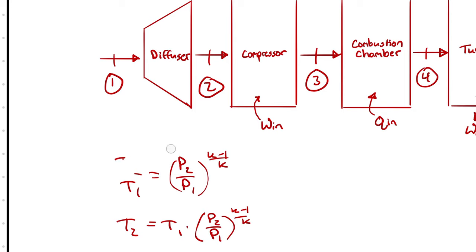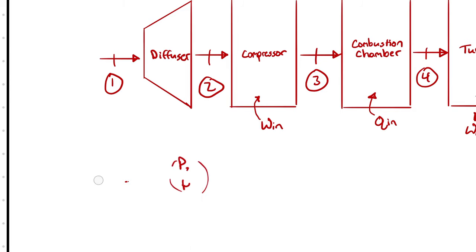We know how much the kinetic energy of the air decreases across the diffuser. Since the diffuser operates ideally, all that kinetic energy decrease goes into the fluid's enthalpy. For an ideal gas, that enthalpy change directly corresponds to a temperature change, and because we assume constant specific heat capacity, we substitute Cp·ΔT for ΔH and express the temperature change as a function of velocity change.